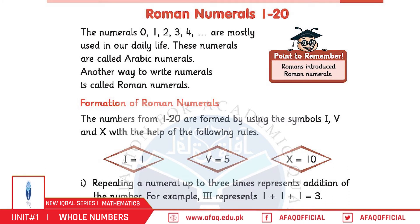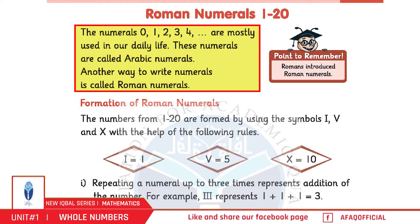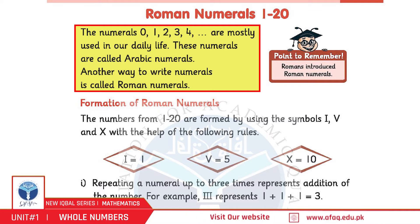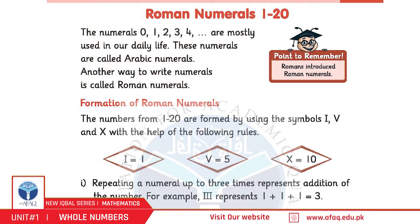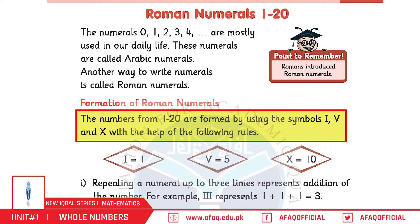Baccho, ab hum Roman numerals 1 to 20 padenge — page number 2. Baccho, jo numerals 0, 1, 2, 3 waghera waghera hum istemaal karte hain, unko Arabic numerals kaha jata hai. Numerals ek doosre tarike se bhi likhe jaate hain, jinko Roman numerals kehte hain. Formation of Roman numerals: Roman numerals ko 1 se 20 tak likhne ke liye yeh symbols istemaal hote hain.